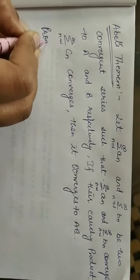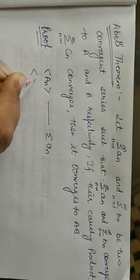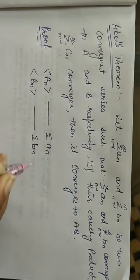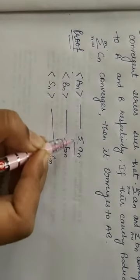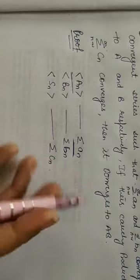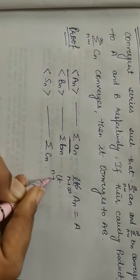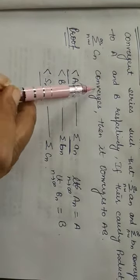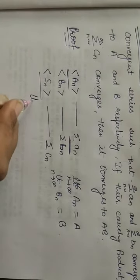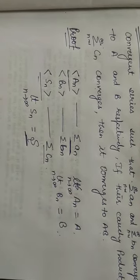Now let's prove this result. We suppose A_n is the sequence of partial sums of series sigma a_n, B_n is the sequence of partial sums of series sigma b_n, and S_n is the sequence of partial sums of the Cauchy product series. Since sigma a_n converges to A, its sequence of partial sums A_n also converges to A. Similarly B_n converges to B, and S_n is given to be convergent — say it converges to S. We have to prove that S = A × B.